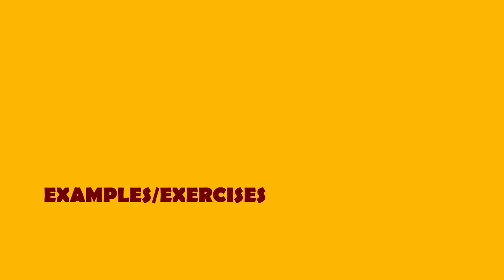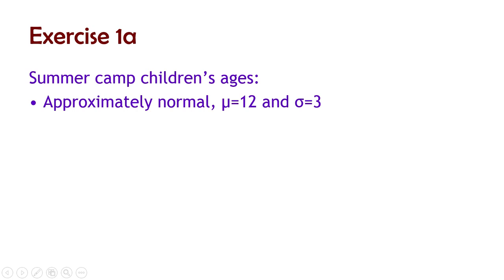Let's run through some examples of how to use sampling distributions. We're looking at the sampling distribution of the means. Let's imagine we have access to summer camp children's ages — all the kids at summer camps around the world, some population. All the ages of these kids have a mean of 12 and a standard deviation of 3, and the distribution is approximately normal, so the sampling distribution of means is going to be very normal.